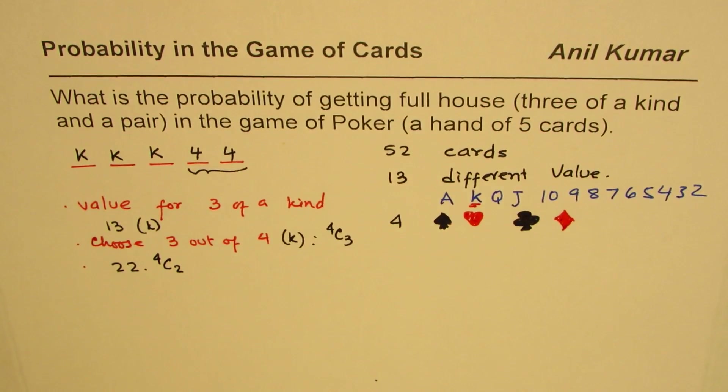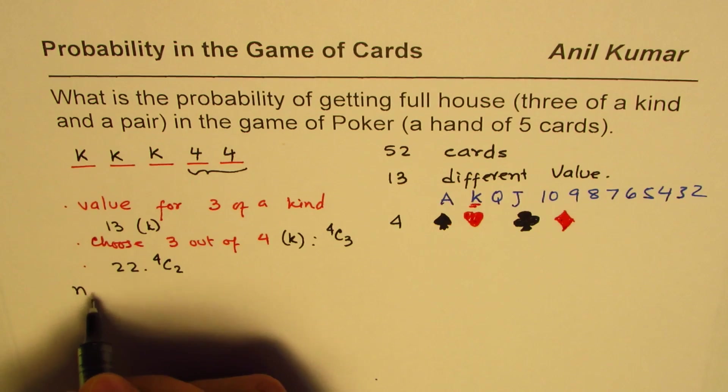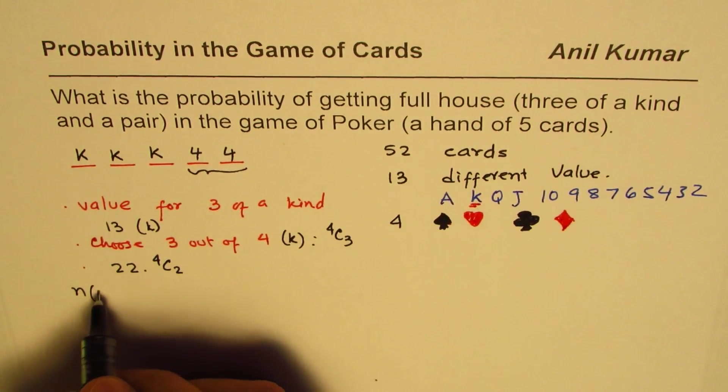From the multiplication rules we can say that the probability of our event, the sample space, gives us total number of outcomes.